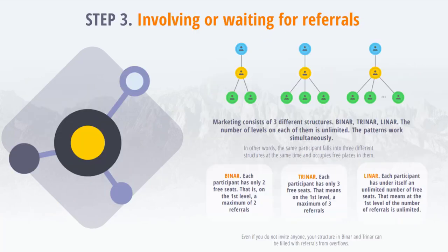Step 3: Marketing consists of three different structures — Biner, Triner, and Lina. The number of levels on each of them is unlimited. Structures work at the same time; in other words, the same member gets into three different structures simultaneously and takes up a place in each of them.